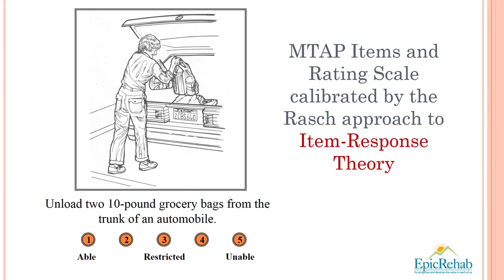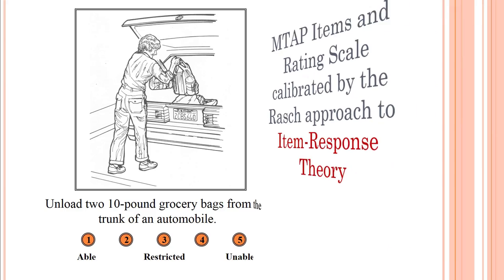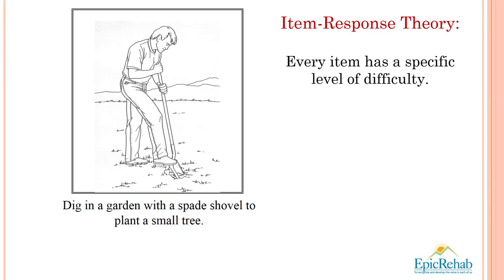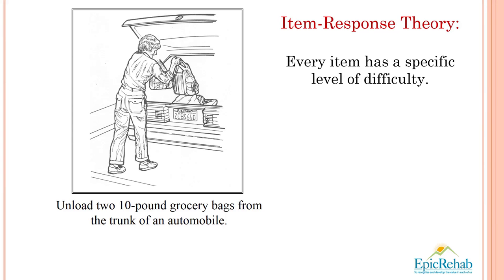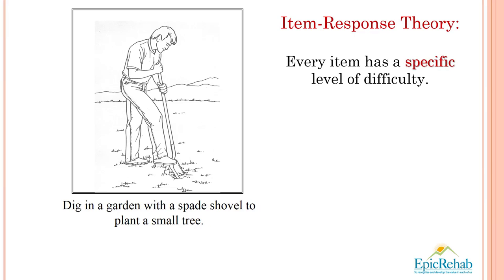Dr. Rasch was a Danish mathematician who believed that the traditional methods of testing left a lot to be desired, which we also believe. Item response theory starts with the idea that every item has a specific level of difficulty. For example, digging a garden with a spade shovel to plant a small tree is somewhat more difficult than unloading two 10-pound grocery bags from the trunk of an automobile. We have used this approach with more than 20,000 subjects to come up with a specific difficulty level for all of the items in our library.